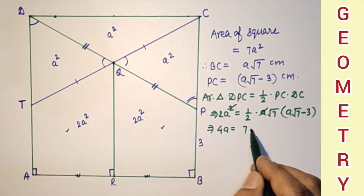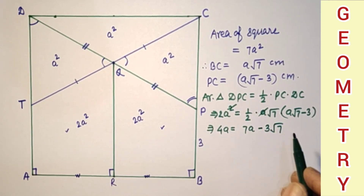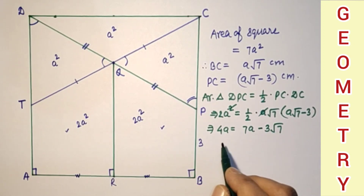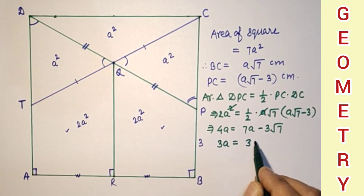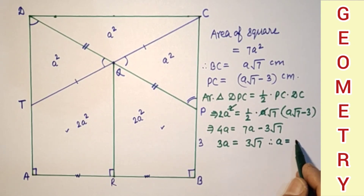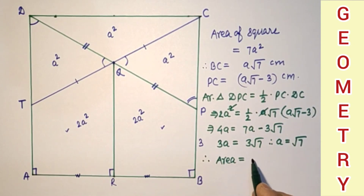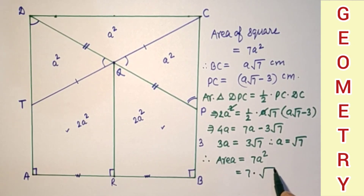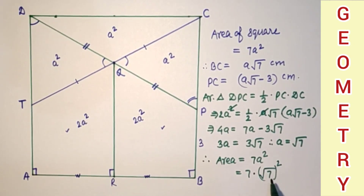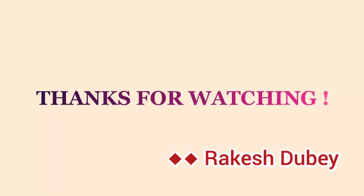After simplification we are getting 3A equals root 7. So therefore area equals 7A squared, and that is equal to 7 into root 7 squared, which equals 7 into 7 by 9, which equals 49 centimeters squared. Once again, this is the answer — 49 centimeters squared.